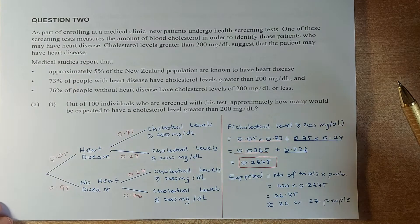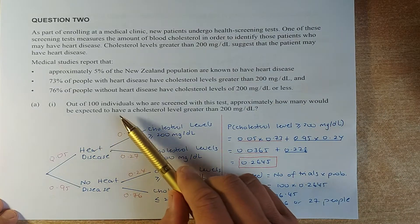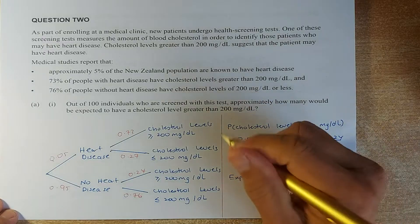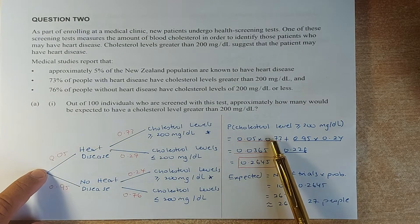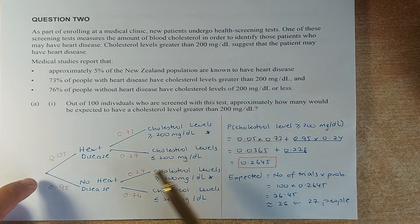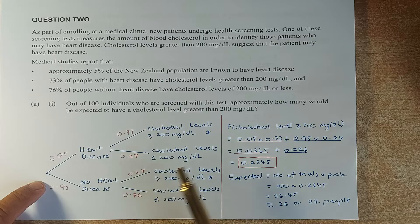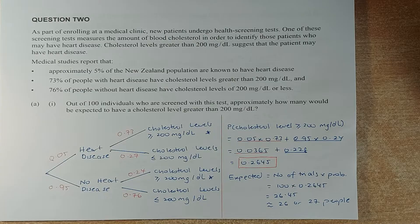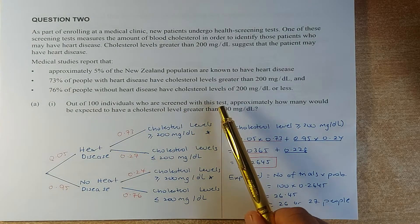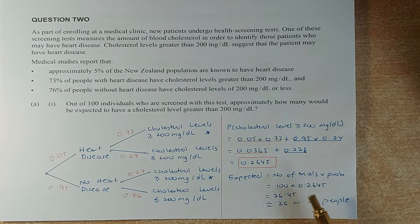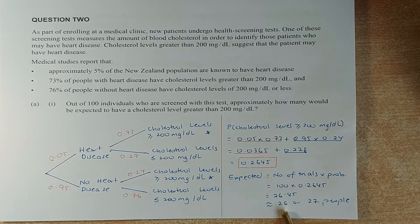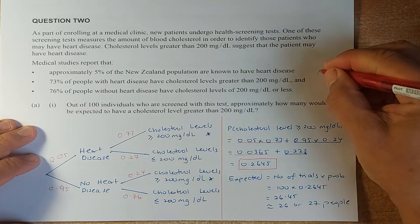They say out of 100 individuals who will be screened, approximately how many would you expect to have a cholesterol level greater than 200? You multiply the probabilities that lead to it: 0.05 times 0.73 equals 0.0365, add with 0.95 multiplied by 0.24 which is 0.228. Add them together, it's 0.2645. Expected value is number of trials times probability: 100 times 0.2645 gives 26.45. According to the marking schedule, you can accept both 26 or 27 people, and that will give you an achieve.